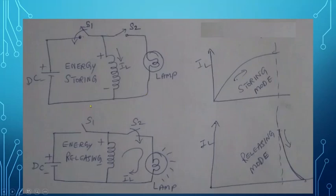After the storing mode, we open switch S1 and close switch S2. The energy stored in the inductor is then released via the lamp — the lamp glows. This is the releasing mode. The curve falls from top to bottom. The lamp will keep glowing until the complete charge is discharged from the inductor. The energy stored in the inductor is dissipated as heat in the lamp, and once all energy is released the lamp goes off.